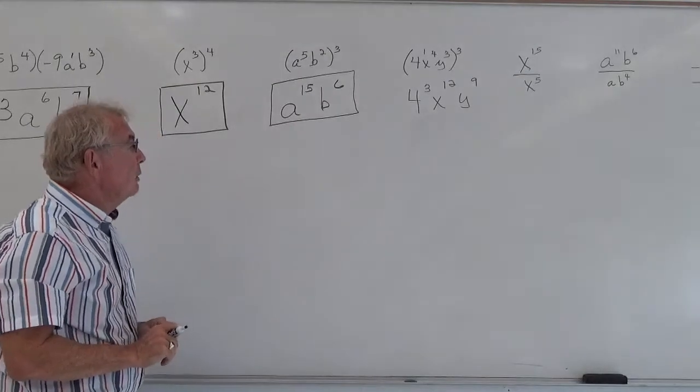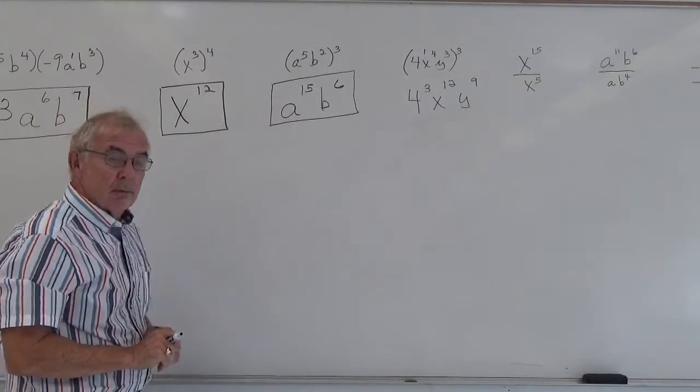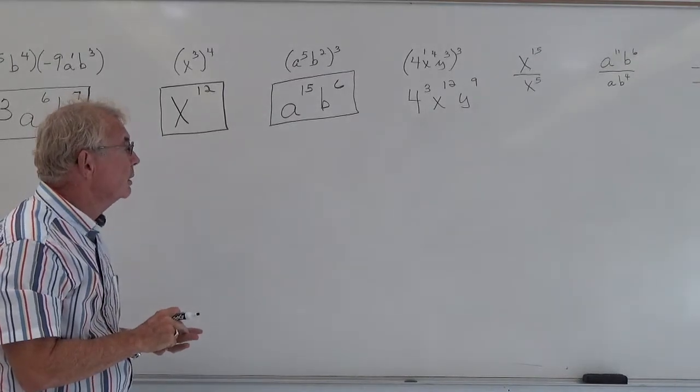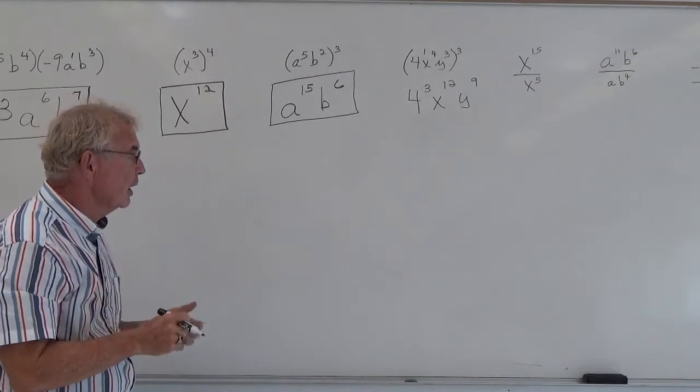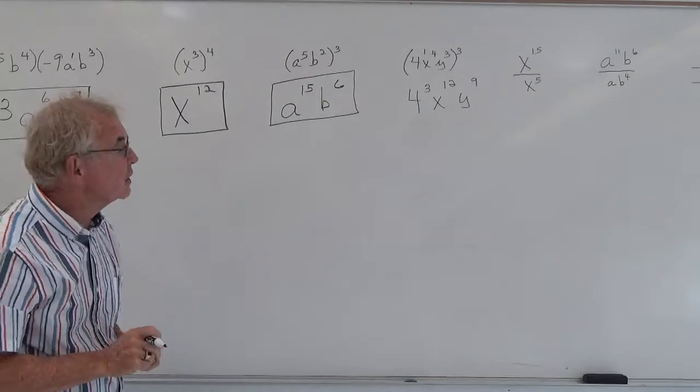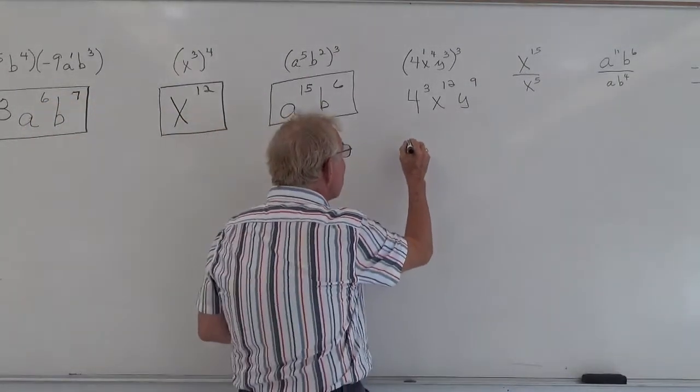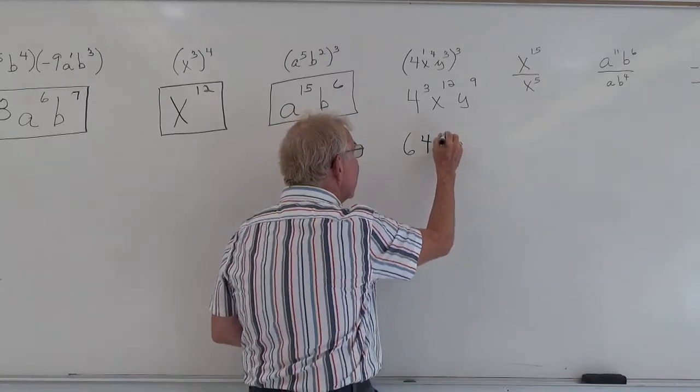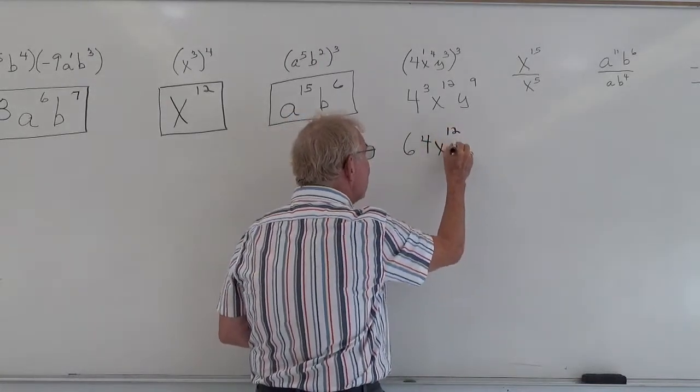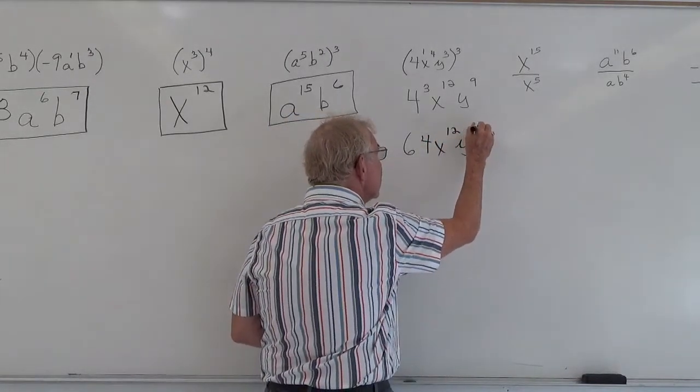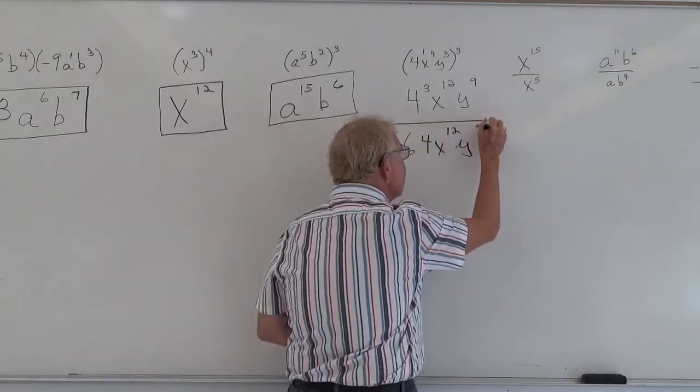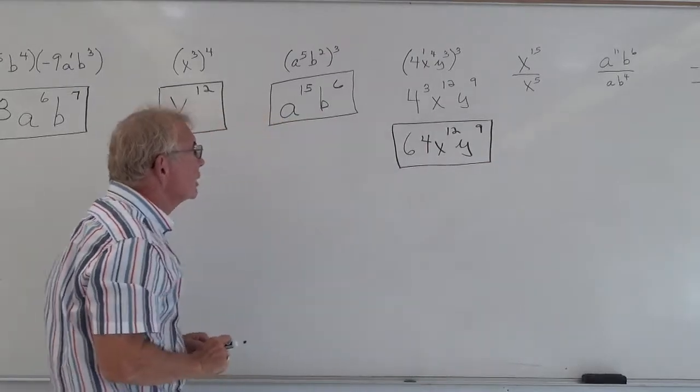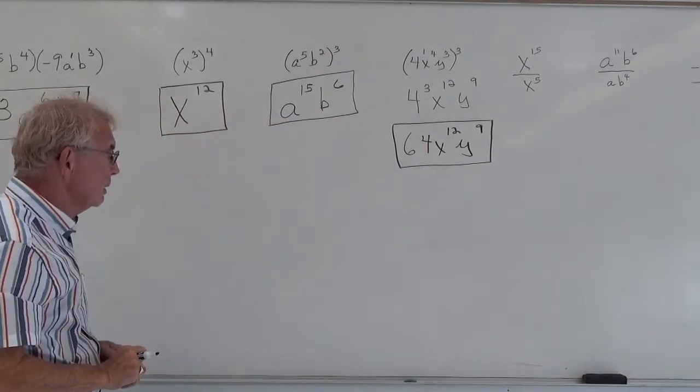But you wouldn't go into a store and say I want 4 cubed of something. 4 cubed means 4 times 4 is 16, times another 4, which you would get 64. So the simplified answer would be 64, x to the 12th, y to the 9th. So there's our three examples on the power exponent.